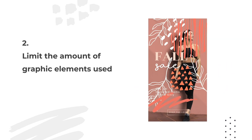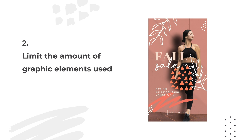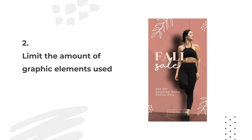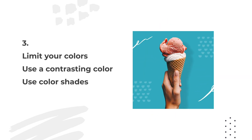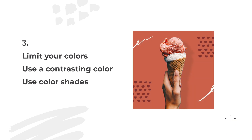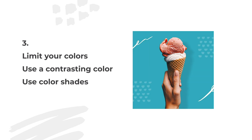Limit the amount of elements you use and try to keep them in a similar style. You can always duplicate the same element to keep everything looking consistent. Use graphic elements in your design to accent, give interest, or highlight — never overpower your images or text. Just like limiting the amount of graphic elements you use, the same applies to colors. Don't go color crazy; always remember the one or two rule. To complement your hero color, try using light or dark shades of it to keep everything looking in harmony.